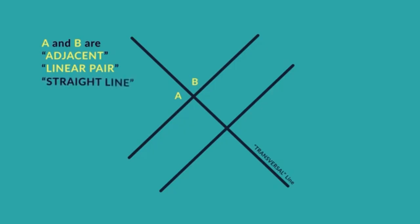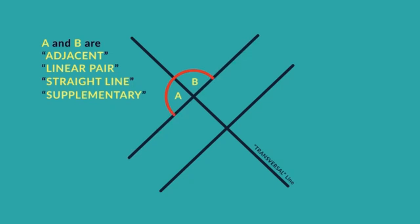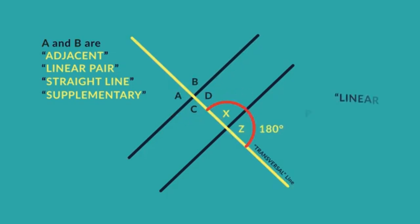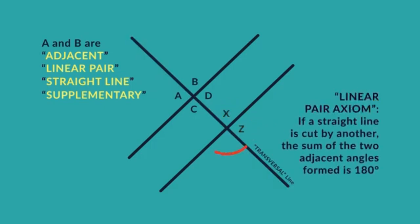If a ray ends on a line, the sum of two adjacent angles is 180. If the sum of two adjacent angles is 180, then the non-common arms form a line.